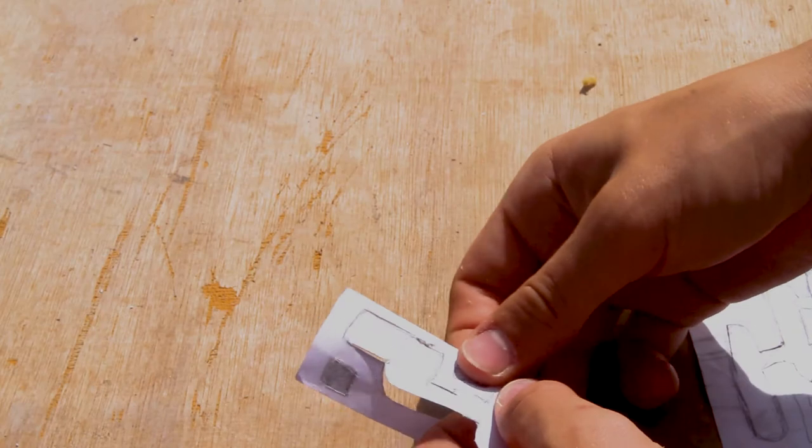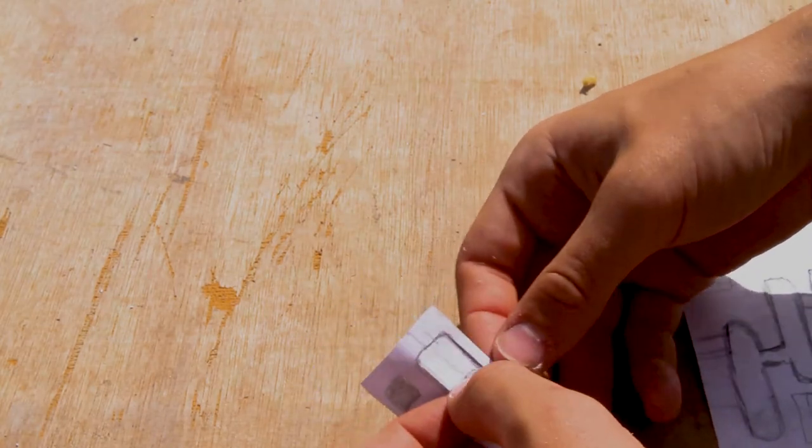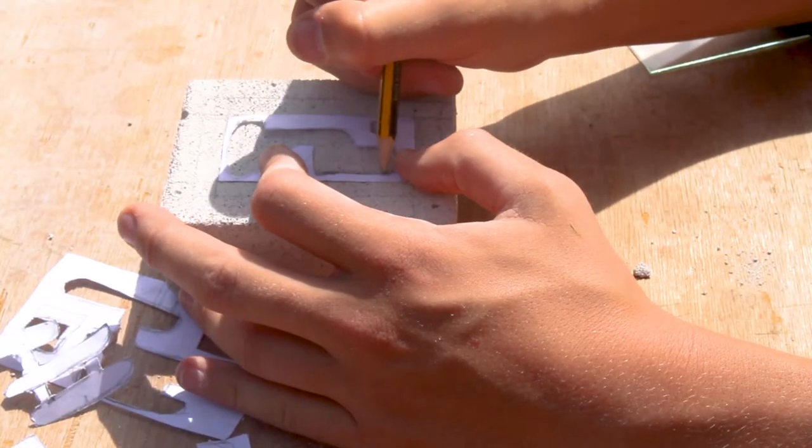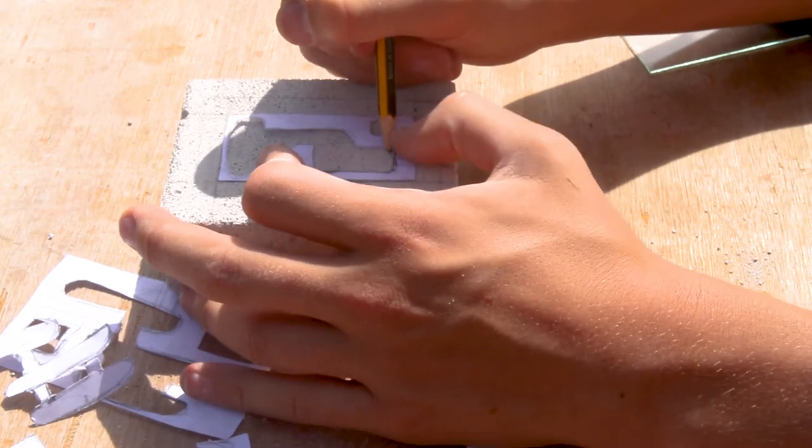After drawing the nest out on some paper and cutting it out, I place them onto the AAC and trace them out inside the safe zones.